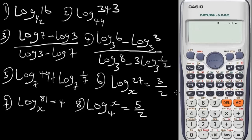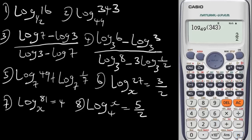For question 2: log base 49 of 343. The base is 49, so we input log 343 with base 49 and press equals. The answer is given. To put this in decimal, press SD — you get 1.5. For the anti-log, press Shift then this log button to get the anti-log of 1.5.